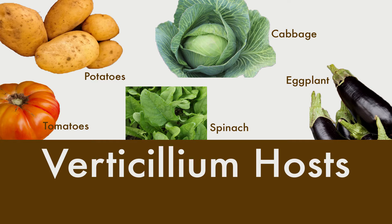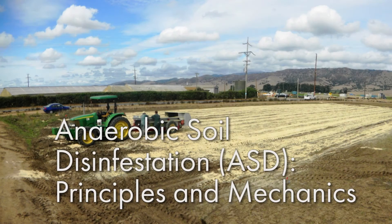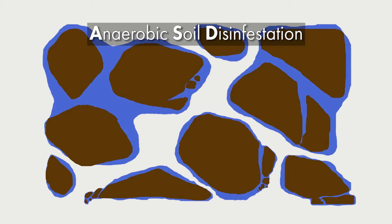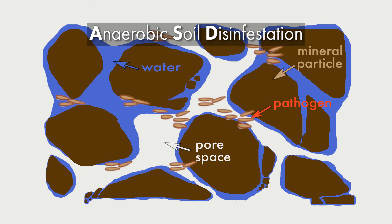Being a diversified organic grower is challenging because we grow lots of vegetables that are potential hosts for these pathogens. Anaerobic soil disinfestation, known as ASD, is a biological process that can control a range of soil-borne pathogens using the principle of acid fermentation.